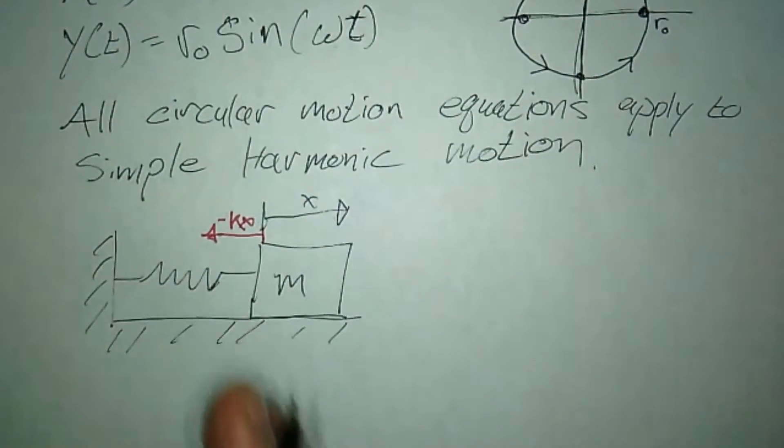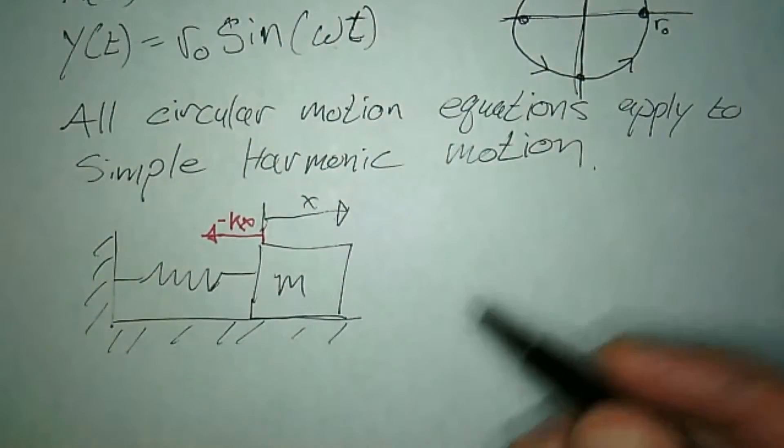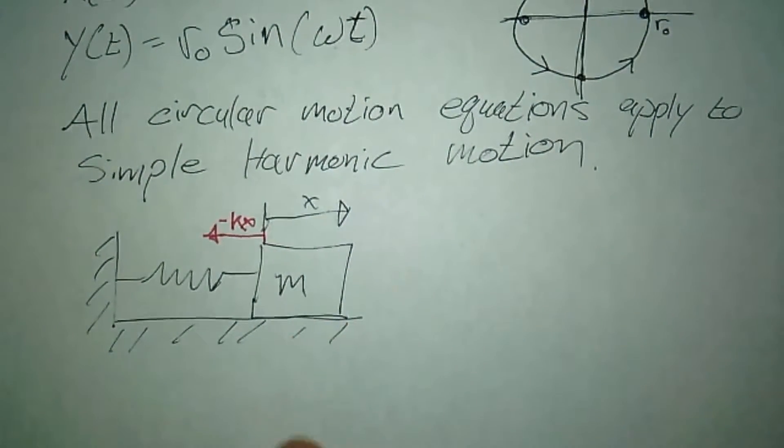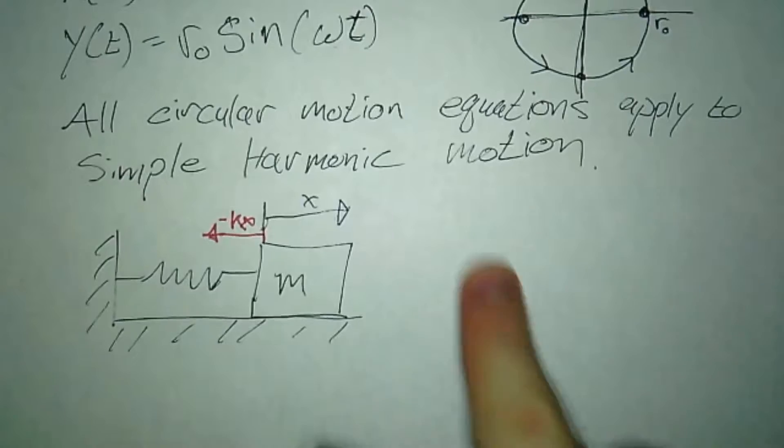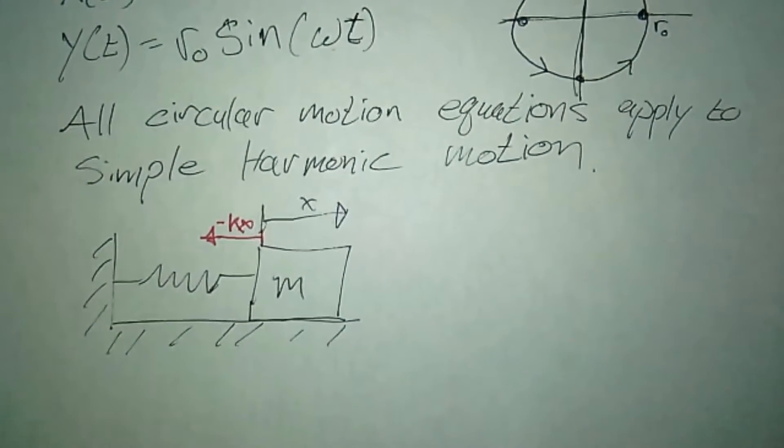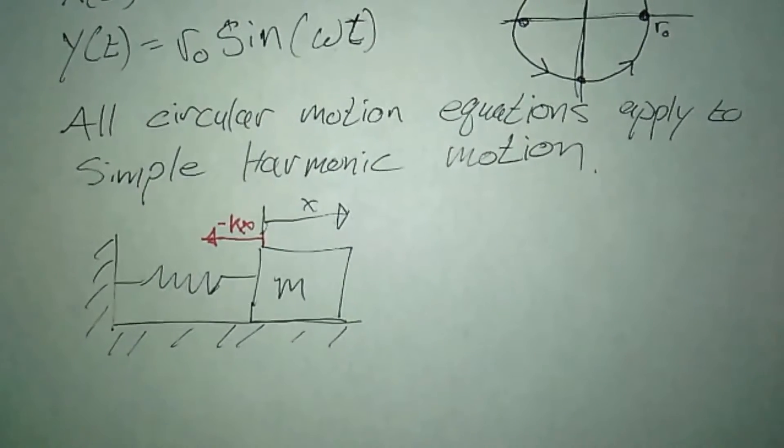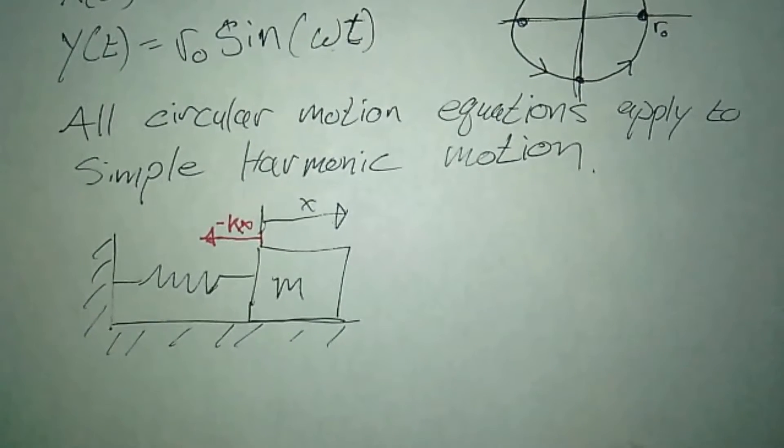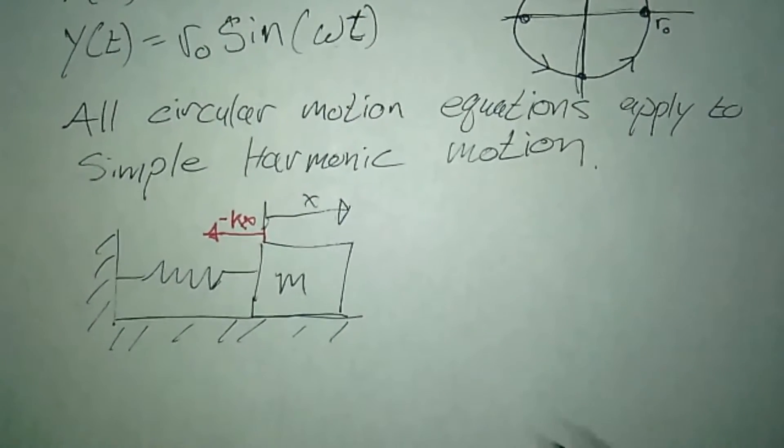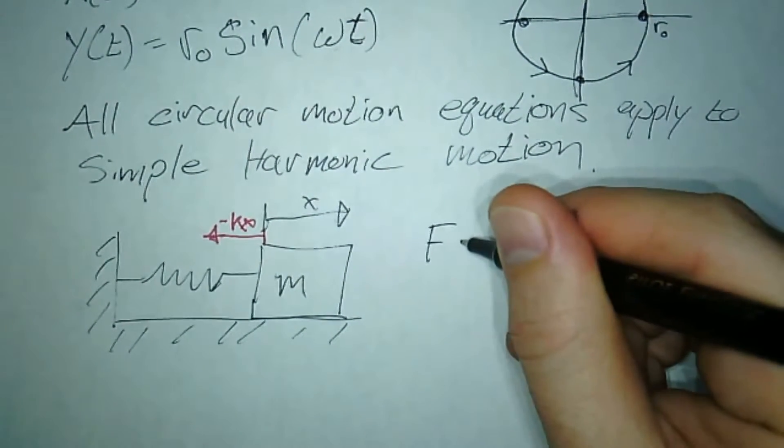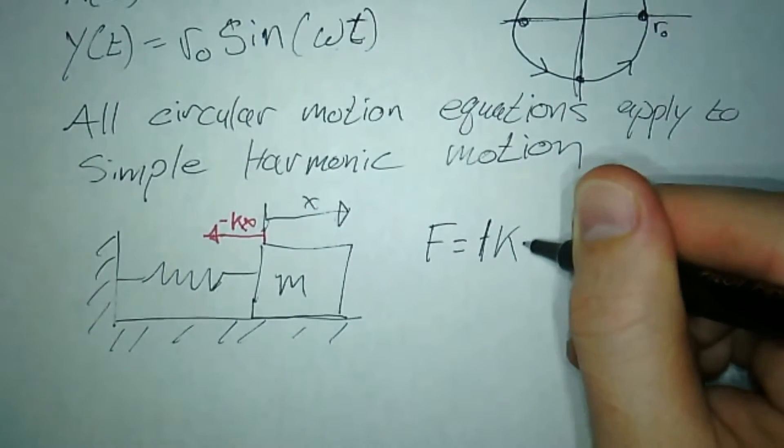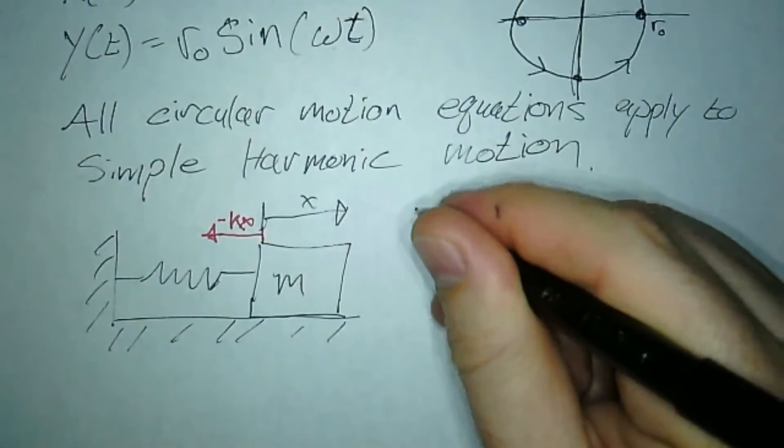The force is going to point that direction and it's going to oscillate back and forth. But you could imagine a system where I had springs going other ways, and I could actually get it going in circular motion. Maybe with four springs it'd be circular motion. The trick here is that my force |F| = kx.